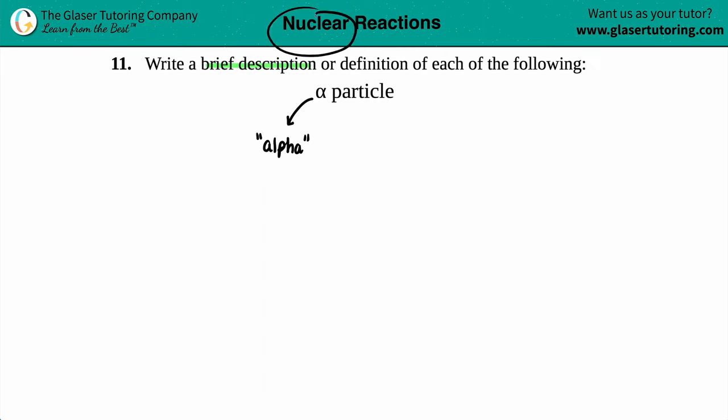An alpha particle, since it's part of nuclear chemistry, these are things that have high amounts of energy. So an alpha particle is a particle that has high or large amounts of energy.